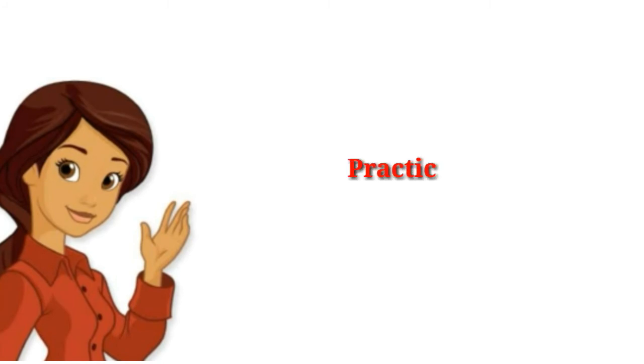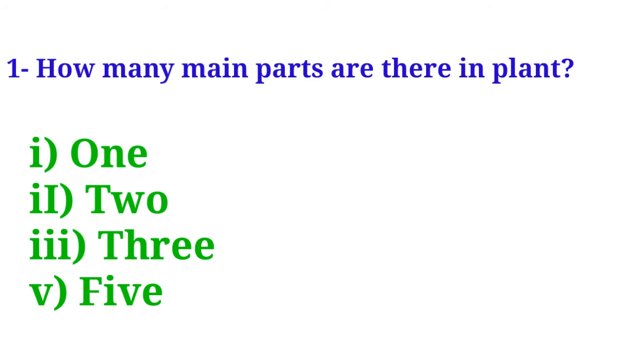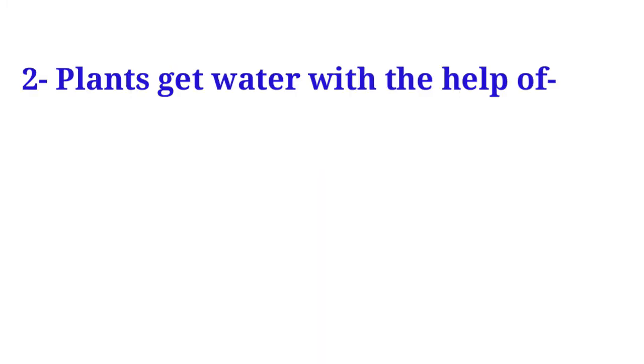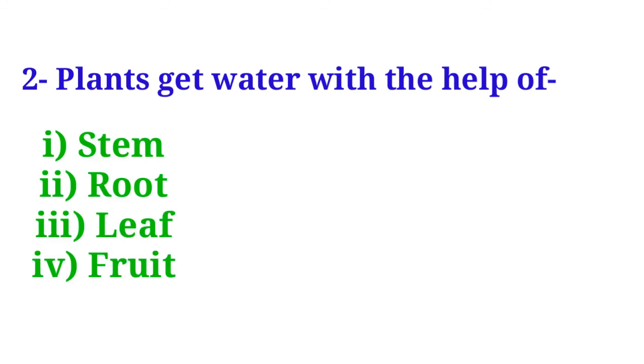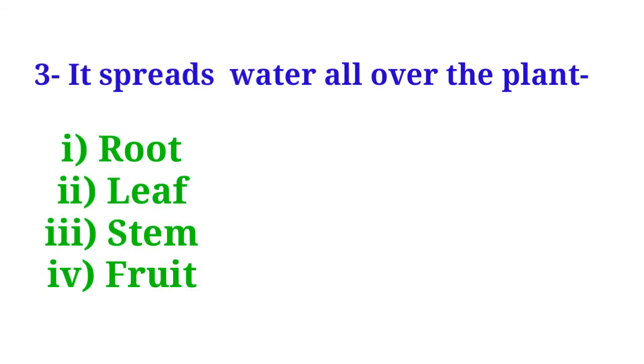I hope you understood today's content. Let's go for practice. Your first question is: How many main parts are there in plants? Your options are one, two, three, five. The correct answer is five. Your next question is: Plants get water with the help of — stem, root, leaf, or fruit? The correct answer is root.